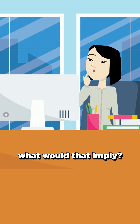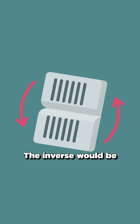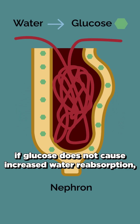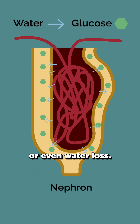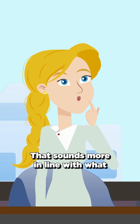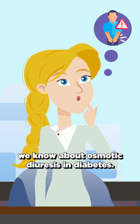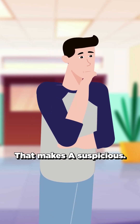Ask: if this answer were false, what would that imply? Does it make sense? Let's test Option A. The inverse would be: if glucose does not cause increased water reabsorption, maybe it causes decreased reabsorption or even water loss. That sounds more in line with what we know about osmotic diuresis in diabetes. Glucose in the nephron pulls water in, not out. That makes A suspicious.